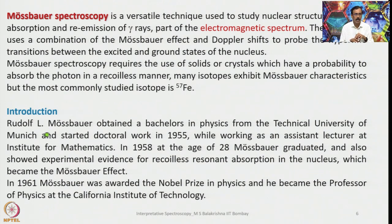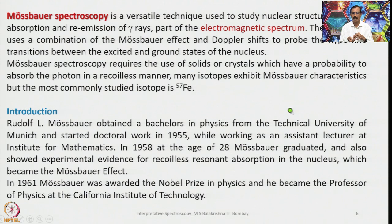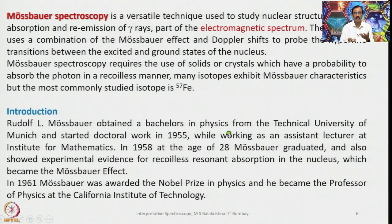The technique is named after Rudolf Mössbauer. He obtained a bachelor's in physics from the Technical Institute of Munich, Germany, and started doctoral work in 1955. He was also working as an associate lecturer in the Institute for Mathematics. In 1958, he obtained his doctoral degree and demonstrated experimental evidence for recoilless resonance absorption in the nucleus, which became popularly known as the Mössbauer effect. In 1961, Mössbauer was awarded the Nobel Prize in Physics and became a professor at the California Institute of Technology.